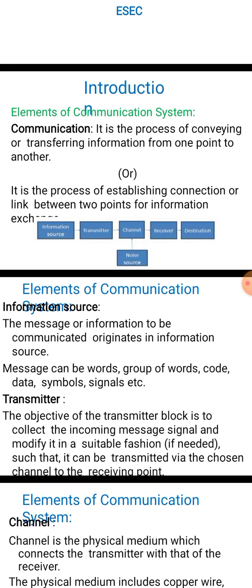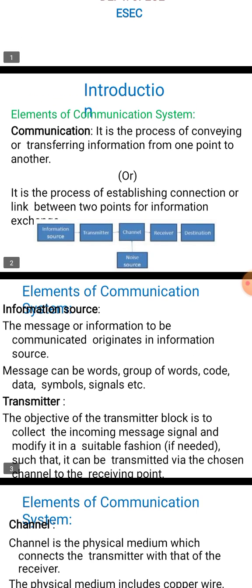In the communication process, the original source can be in analog form or digital form. In analog form, examples include human voice, music, images, still pictures, or video. If the message signal is in digital form, examples include binary coded numbers, alphanumeric codes, signals from computers, or teletype signals.